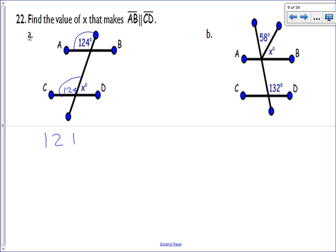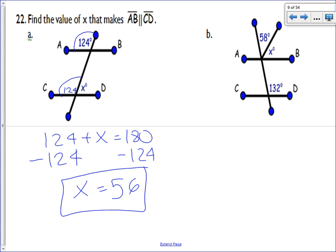And it's also true that 124 plus x is equal to 180 because the two angles are what? Supplementary. Good. So then x equals, what is that, 56? So assuming my mental math is correct, x equals 56. And we are done with 22a.